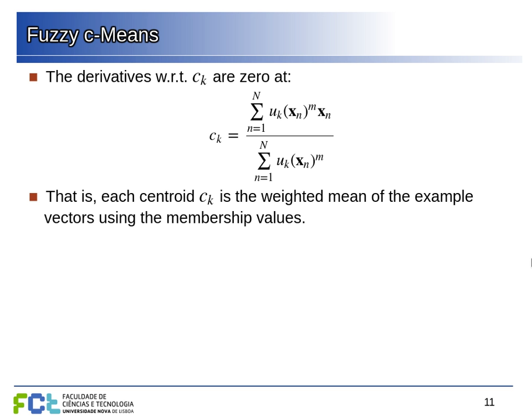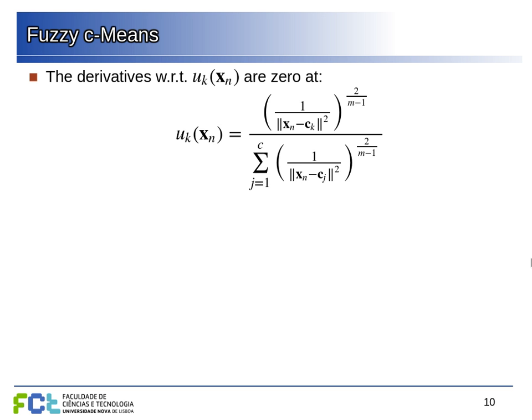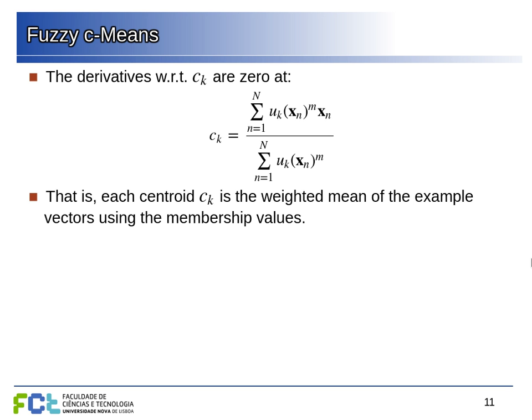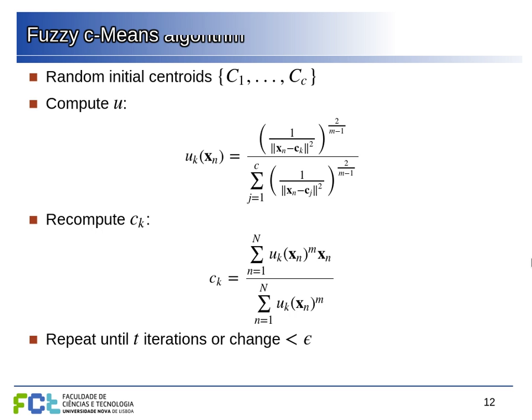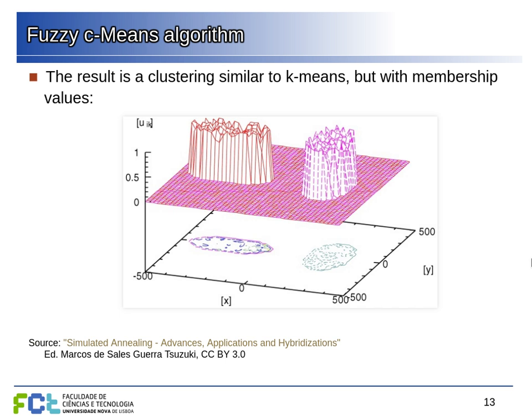This is the idea of expectation maximization. We start with an initial estimate of the parameters, determine initial membership values, then use those to update the parameters. The algorithm alternates between computing membership values and recomputing the centroids, going back and forth until convergence or until the change is too small. The result is similar to k-means but with continuous membership values that vary depending on how fuzzy we make our sets.